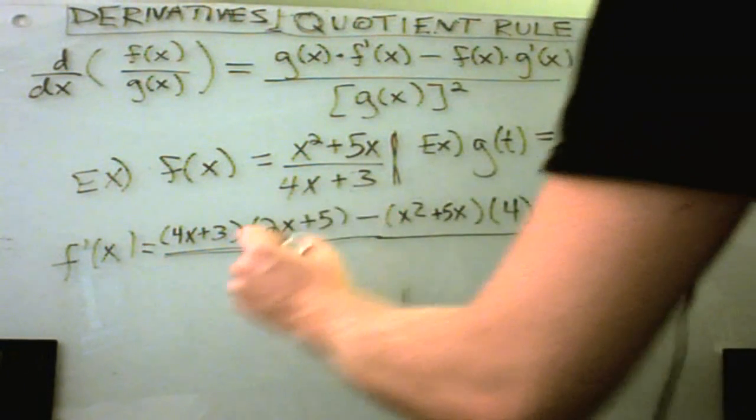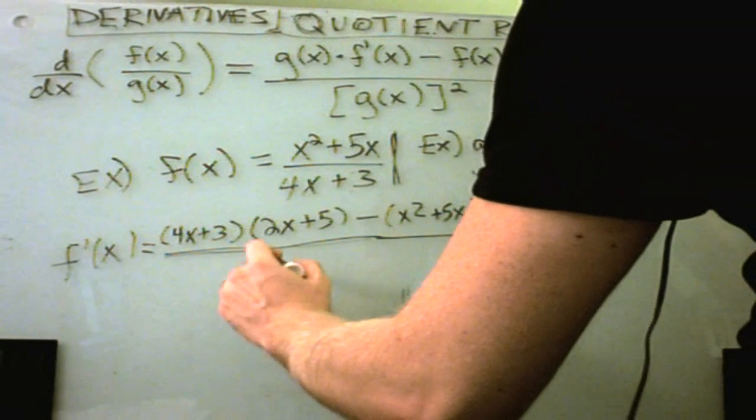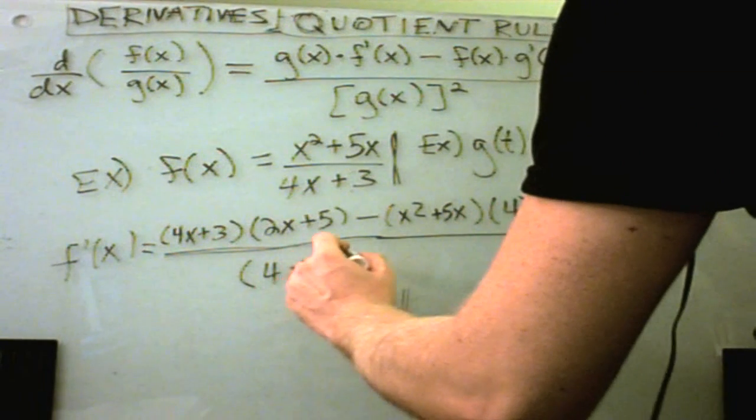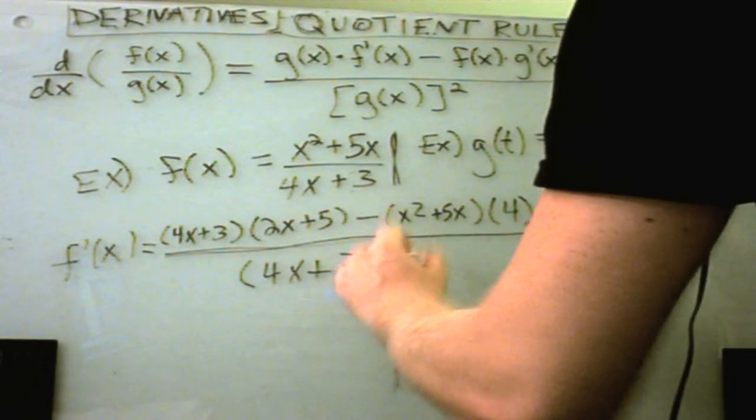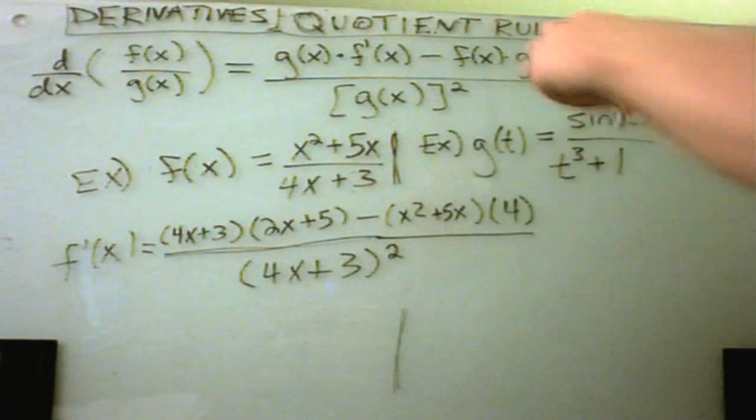And lastly, it says all we have to do is take the denominator, 4x plus 3, and square it. And there's our derivative.